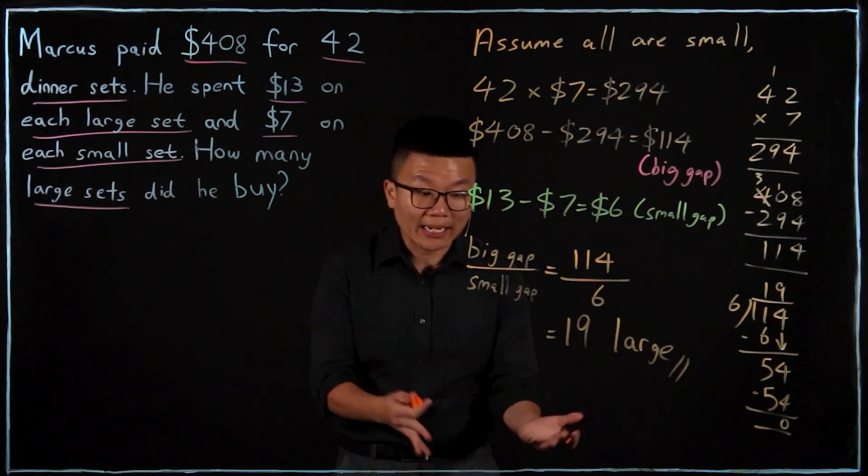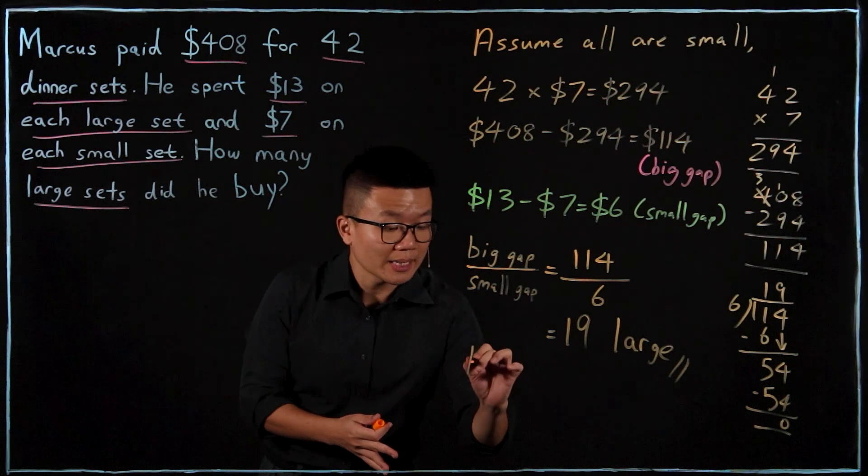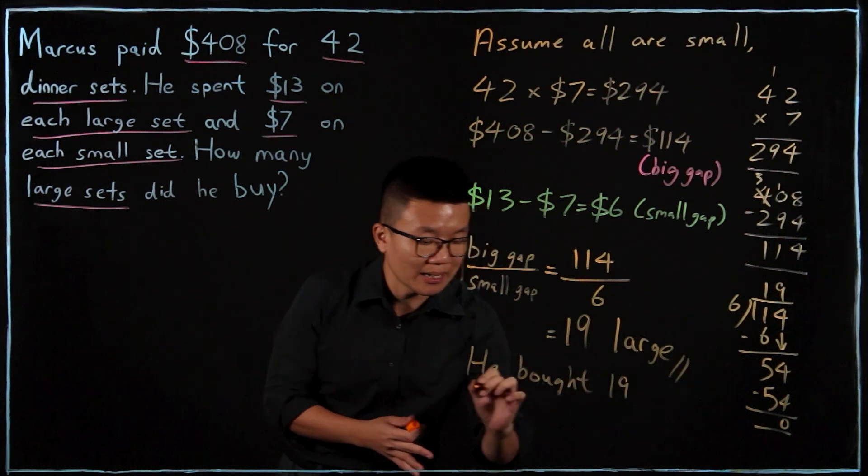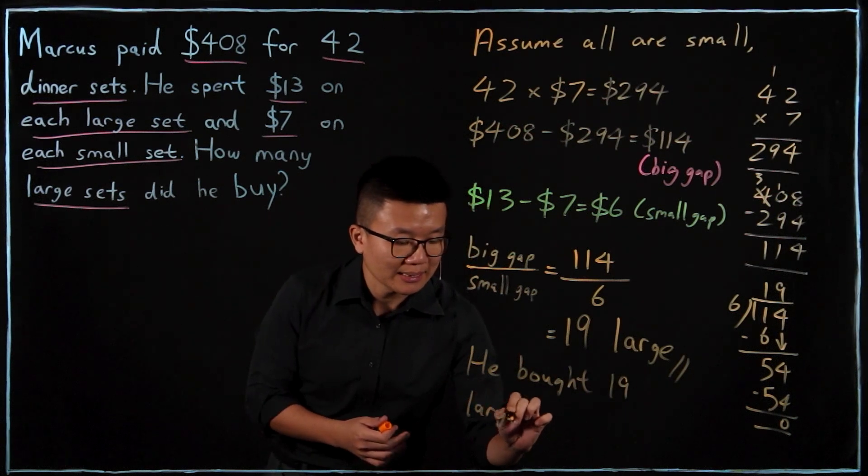And this is how I solve it. And then I'll write my final statement: He bought 19 large sets.